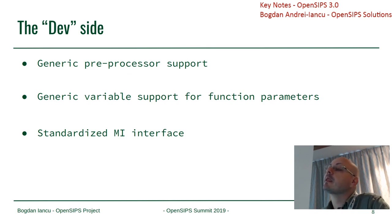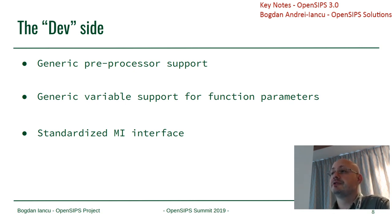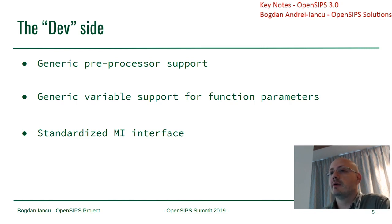Do you intend to keep the XML interface? Well, it's there, it works. OpenSIPS core generates all the MI data as a JSON object, and the XML-RPC interface wraps it, doing a conversion from JSON to XML. We plan to keep it — there are no plans to retire it. We know there are XML lovers out there.